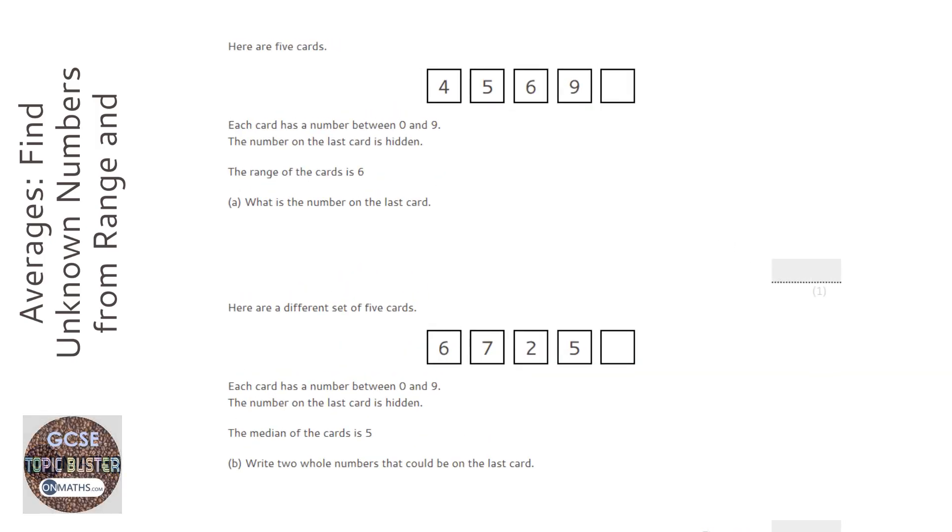All right, so looking at this first question, we've got five numbered cards. Each card has a number between zero and nine, and the number on the last card is hidden. But it says that the range of the cards is six. What's the number on the last card? So the range is the biggest